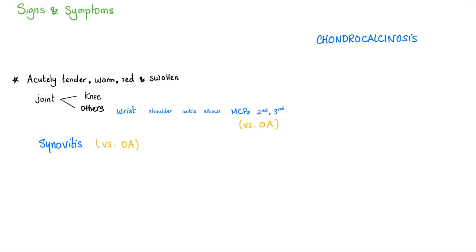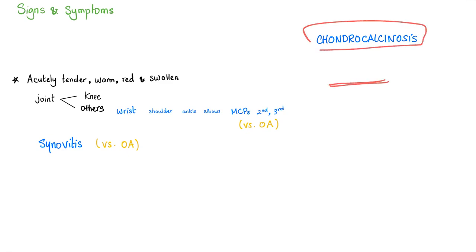Signs and symptoms of pseudogout: acutely tender, warm, red, and swollen joint — probably the knee, but possible in other joints. It affects the MCP joints; osteo does not. Pseudogout can cause synovitis; osteo cannot. Remember chondrocalcinosis — you can find this in acute or chronic patients because it's a line visible inside the cartilage on x-ray, and it's not going away whether acute or chronic.